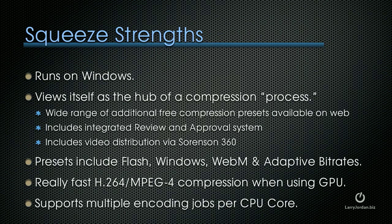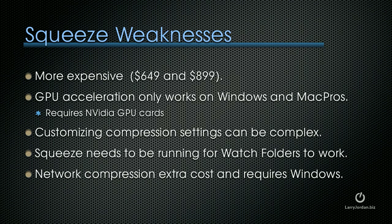Sorenson Squeeze's strengths are that it runs on Mac and Windows and views itself as the hub of a compression process. It has a wide range of additional free compression presets available on the web. It includes an integrated review and approval system for clients, video distribution via Sorenson 360, and presets that include Flash, Windows, WebM, and adaptive bitrates. It provides really fast H.264 or MPEG-4 compression when using a GPU and supports multiple encoding jobs per CPU core. The weaknesses are that it's more expensive at $649 and $899. GPU acceleration only works on Windows and Mac Pros because it requires an NVIDIA GPU card. Customizing compression settings can be complex, Squeeze needs to be running for watch folders to work, and network compression has an extra cost and requires Windows.